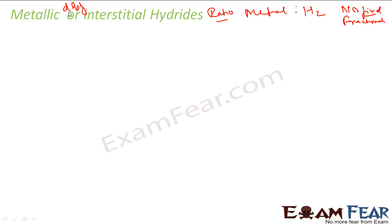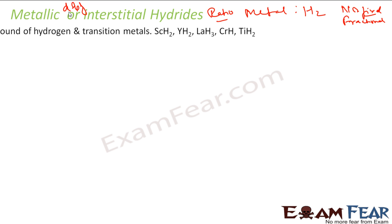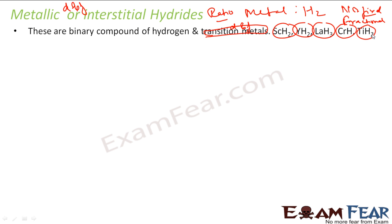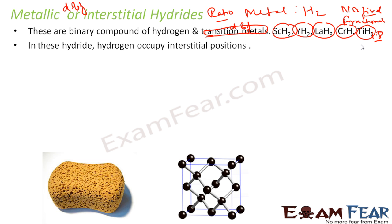In these hydrides, hydrogen occupies holes in the metal lattice. These are binary components of hydrogen with transition metals — D and F block elements. For example: ScH2, YH2, LaH3, CrH3, TiH2. In most cases the ratio is fractional, for example PdH1.8.